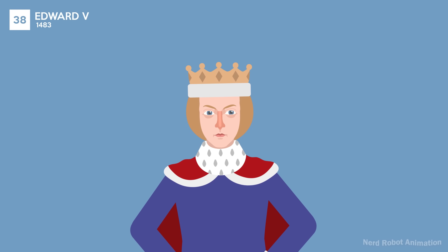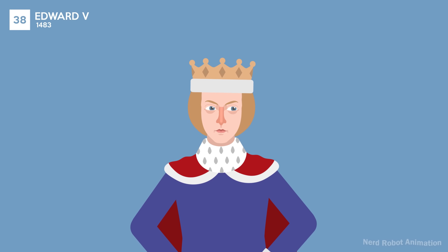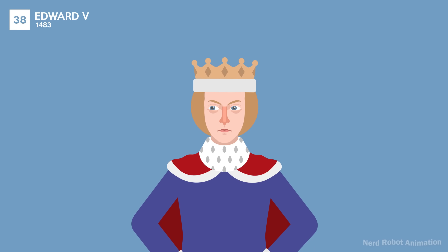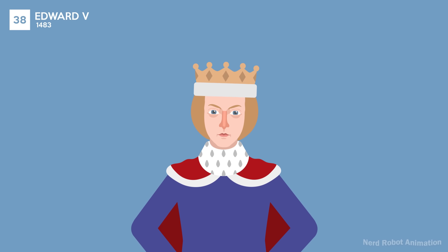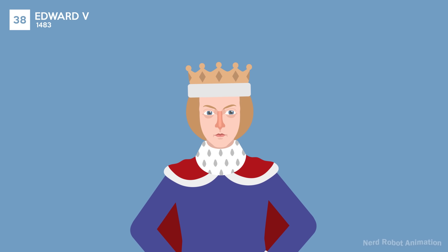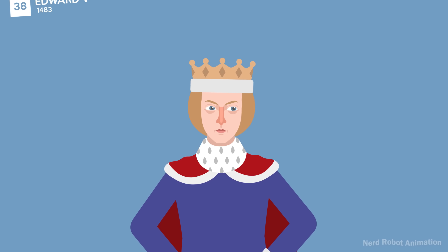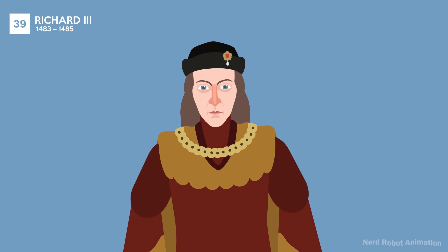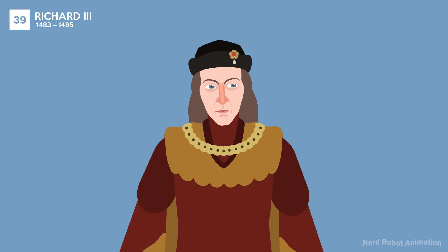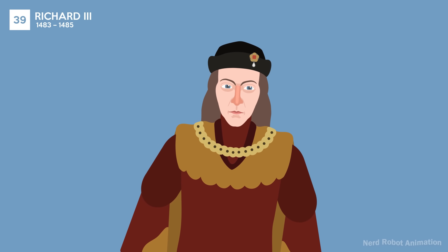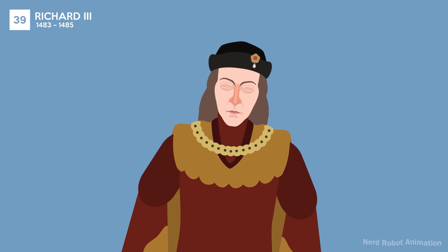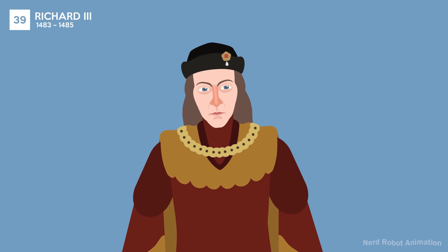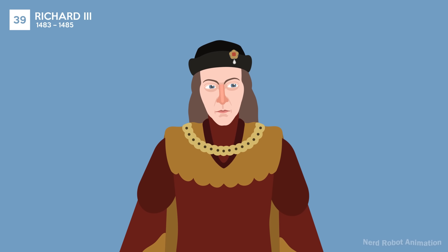Edward V was one of the princes in the tower, disappearing and presumed murdered. His reign was brief and overshadowed by his uncle Richard III's usurpation. Richard III's reign ended at the Battle of Bosworth Field, where he was killed. His legacy is controversial, with debates over his role in his nephews' disappearance.